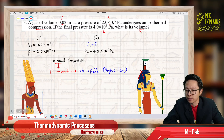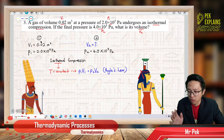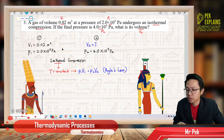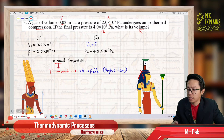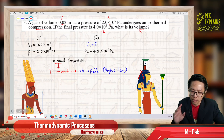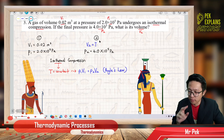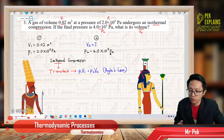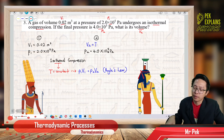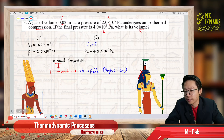Let us list down the information. I like to put in columns — initial and final. So initial: we have V1 and P1. Check: is it in SI unit? We must make sure everything is in SI unit — meter cube, Pascal, Kelvin. For the final situation, we have the final pressure P2, also in Pascal, in SI unit. We need to find the final volume V2.